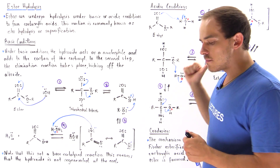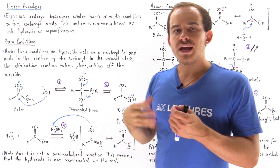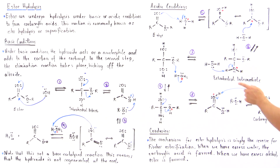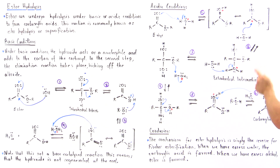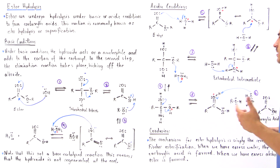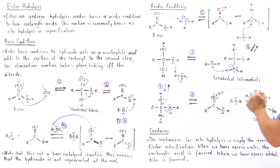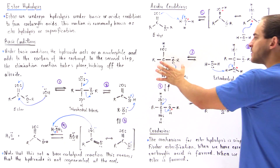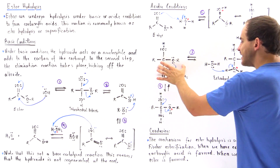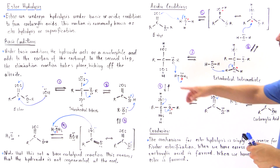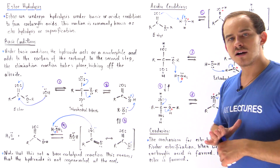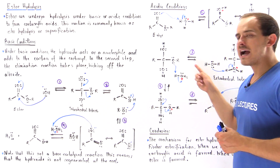In step number three, we have to deprotonate this H atom. We have to deprotonate our oxygen because it contains a positive charge, which is a most destabilizing effect. A water molecule grabs an H, deprotonating this oxygen, forming a tetrahedral intermediate that no longer contains a positive charge on our oxygen. We also form hydronium.